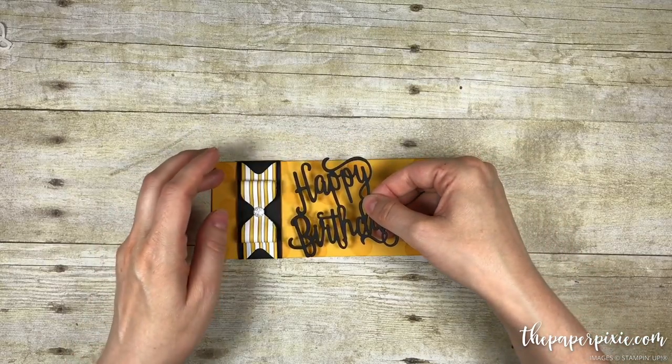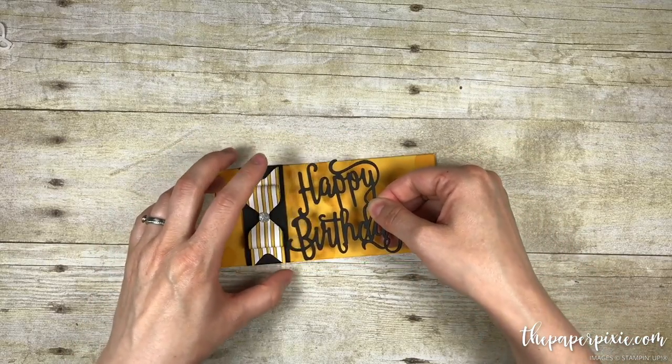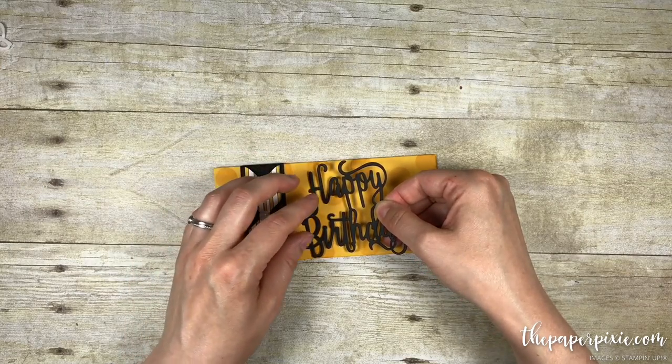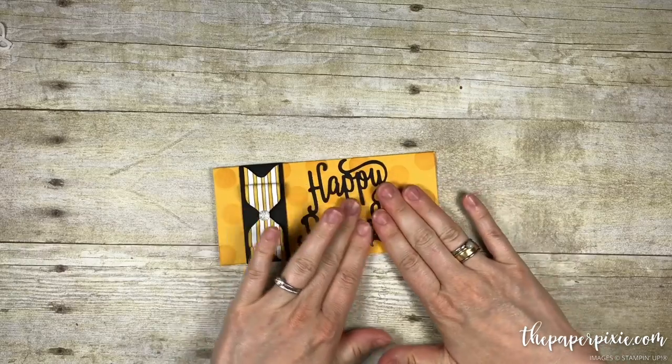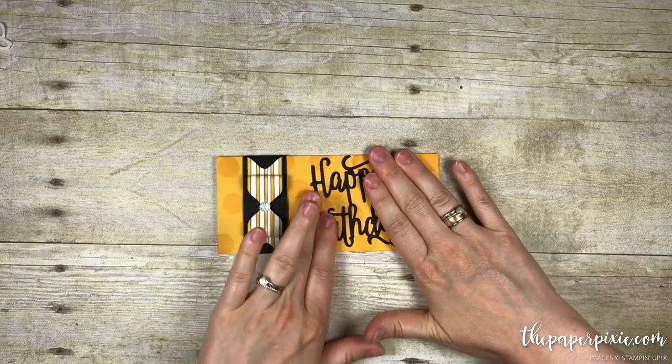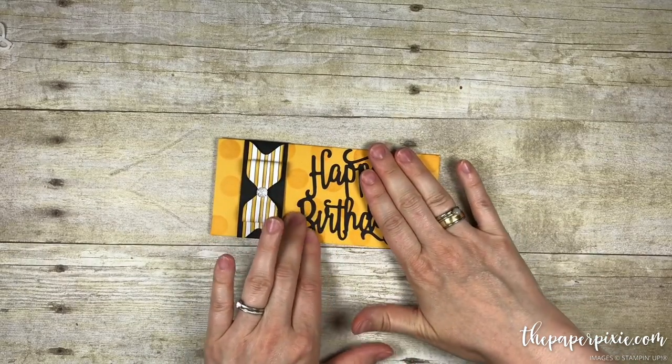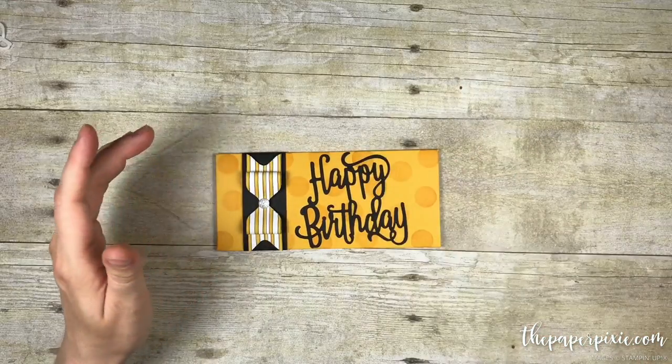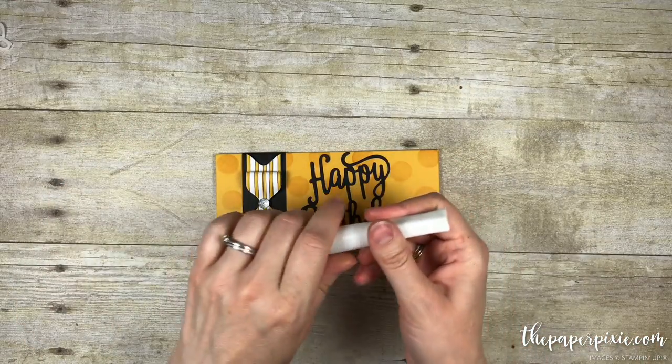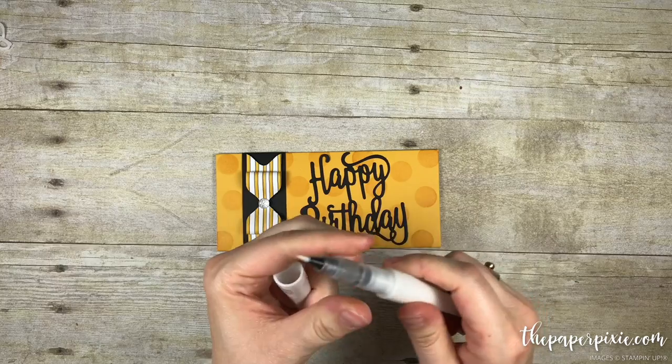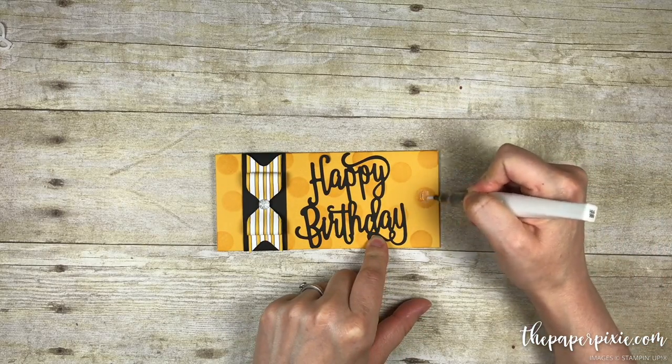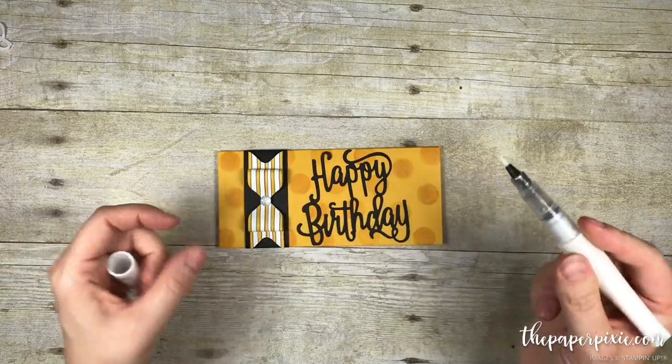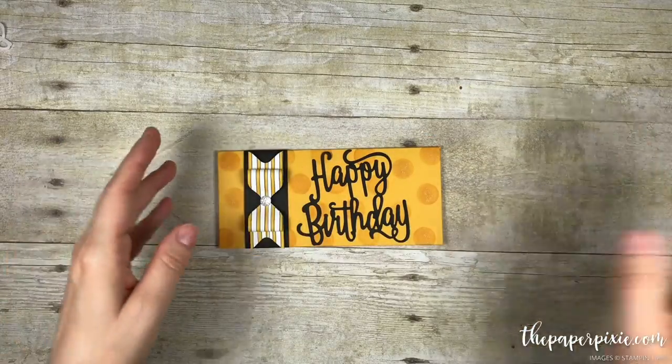We are going to adhere that at a slight angle so that that happy birthday fits perfectly on the envelope. Just press it down is all you need to do once you have used that multi purpose adhesive sheet. Now we are just going to add a little bit of sparkle to it using the clear Wink of Stella. And I am just going to pick some random polka dots that I will add some sparkle to. And we are done!